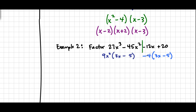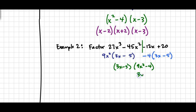Now I pull out the common factor 3x minus 5 from both terms, and I'm left with 9x² minus 4 as the other factor. Again, look for anything that can be factored further. 9x² minus 4 is a difference of squares, factoring into (3x+2)(3x−2). Then I repeat 3x minus 5 as the third factor.